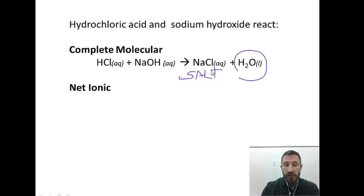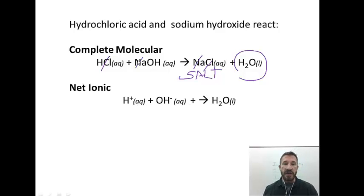Or if you want to write the net ionic reaction, cross out the spectator ions, which would be chloride because it's aqueous on both sides, and sodium because it's aqueous on both sides. And that would leave you with this reaction. A proton plus hydroxide gives you water.